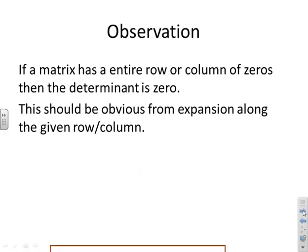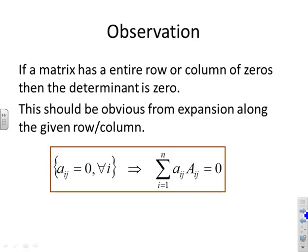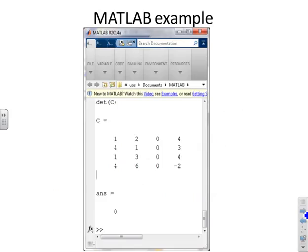This should be obvious from doing expansion along the relevant row or column — if all the coefficients along a row or column are zero, the expansion gives zero. There is a MATLAB example showing a matrix with a column of zeros whose determinant is zero.